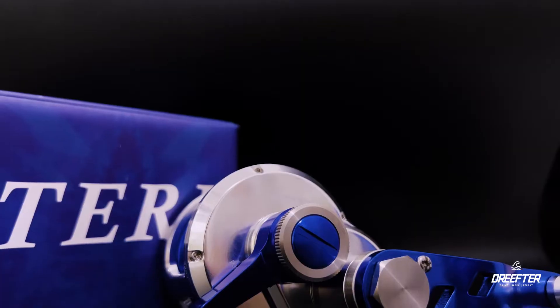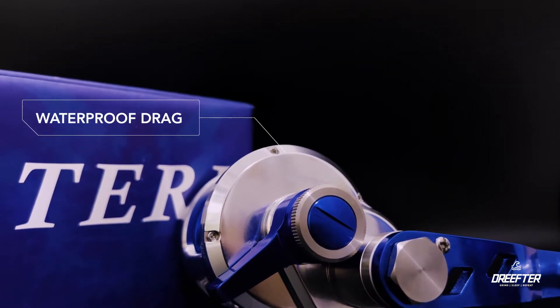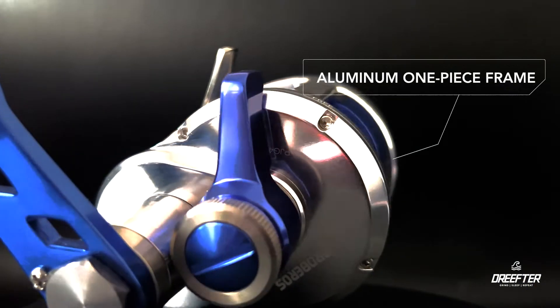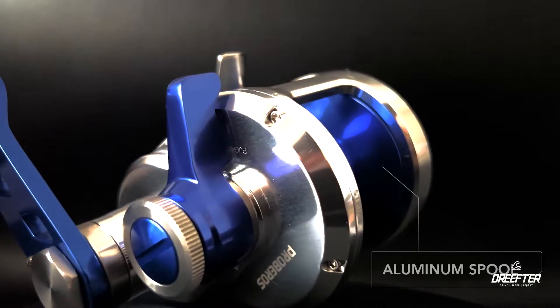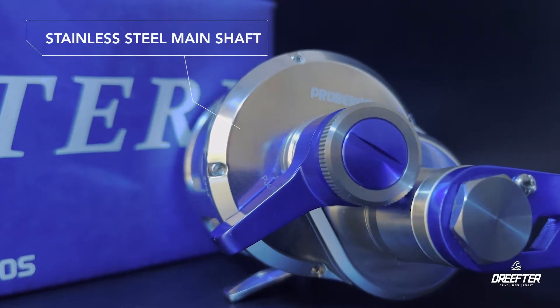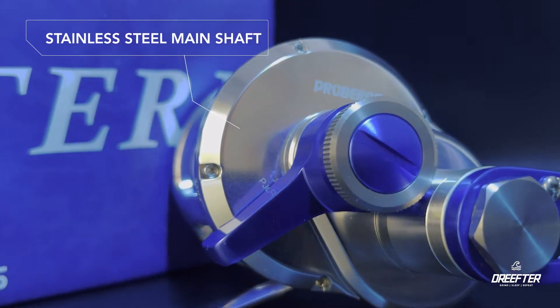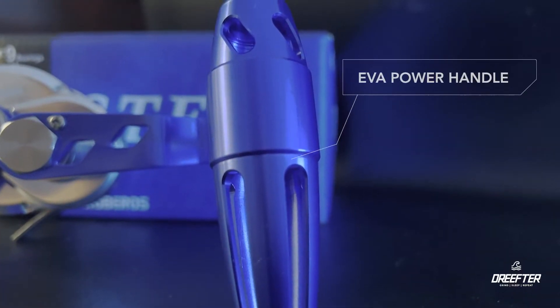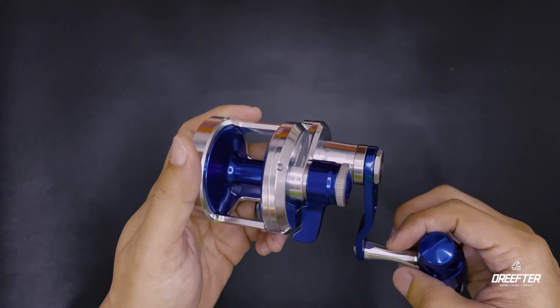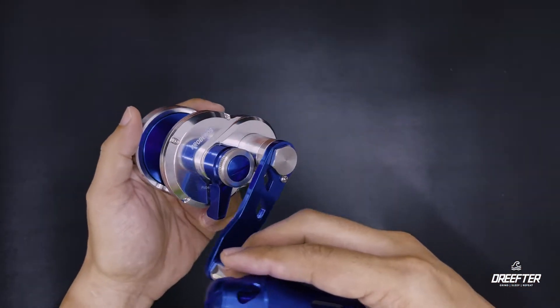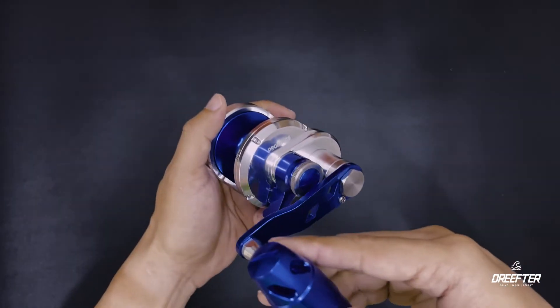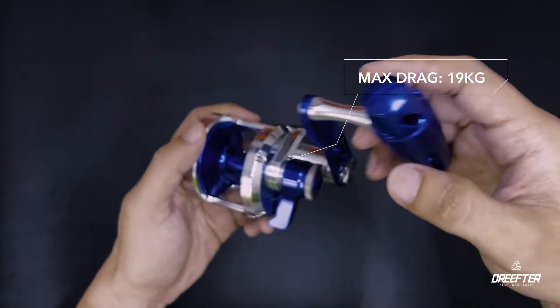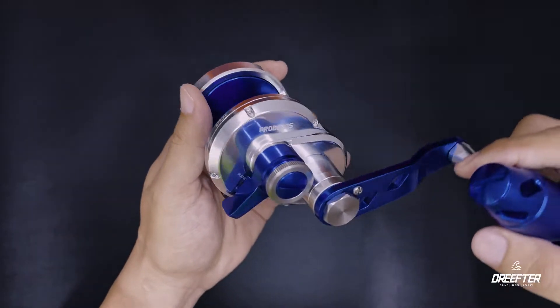So this reel has a waterproof drag, aluminum one piece frame, aluminum spool, anti-corrosion stainless steel main shaft, aluminum EVA power handle. Yung weight niya is 405 grams tapos yung max drag niya ay 19 kg. So sa budget friendly na reel, napaka lakas na, sulit na sulit yung reel na ito.